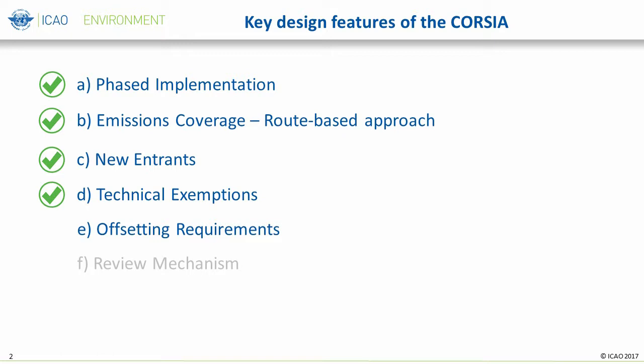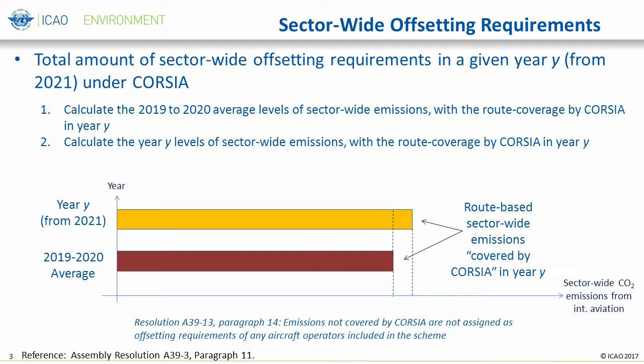One question you may have is how are we going to share the offsetting of emissions gap among operators, and how will this be calculated? This presentation, or part two of the key CORSIA design features, will discuss how to calculate the distribution of offsetting requirements to individual operators, and will also address a mechanism to review CORSIA in the future. We will start with the concept of offsetting requirements.